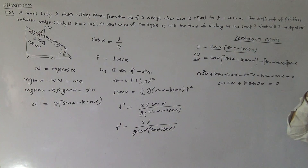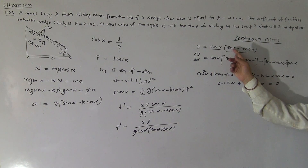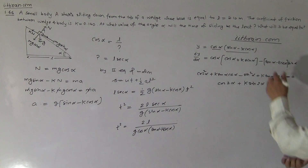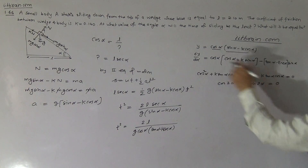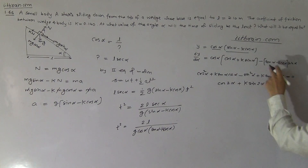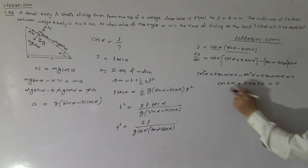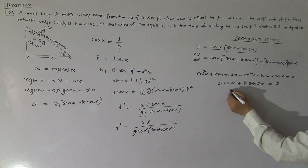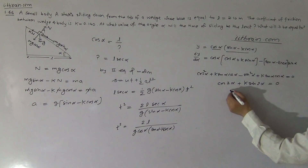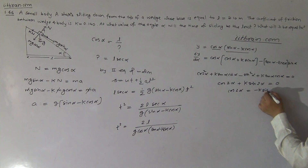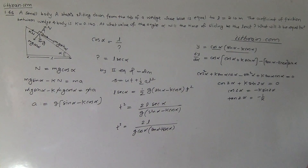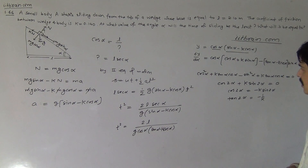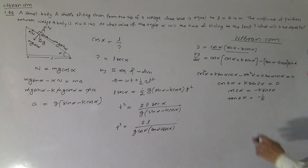From cos 2alpha plus K sin 2alpha equals zero, we get cos 2alpha equals minus K sin 2alpha, so tan 2alpha equals minus 1 over K. Using the double angle formula, tan 2alpha equals 2 tan alpha over (1 minus tan squared alpha) equals minus 1 over K. This gives 2K tan alpha equals minus 1 plus tan squared alpha, leading to tan squared alpha minus 2K tan alpha minus 1 equals 0.